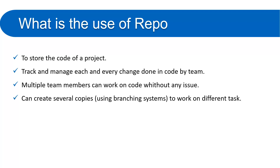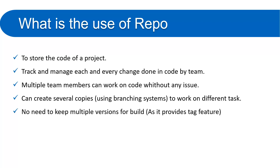The merging of code is handled very easily by the version control. You can create several copies of your code using the branching system. For example, one person working on an authentication feature and another person working on a payment system — all developers can create separate branches and work independently on their own branches.